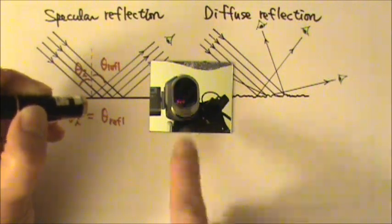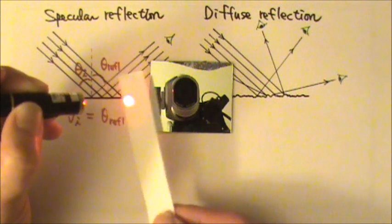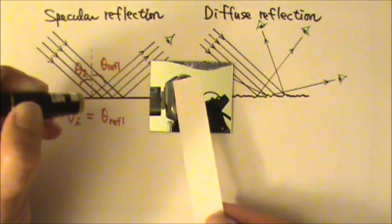For specular reflection off of this mirror, we cannot see the incident ray or the reflected ray unless I put something here to produce diffuse reflection so we can see the red light.